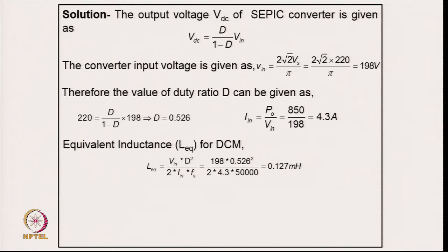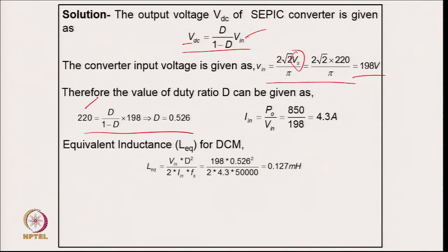Coming to the numerical part: the SEPIC converter is also a buck-boost converter. The average output voltage of the diode rectifier is V_in = 198 V for 220 V RMS. Putting in the value for output voltage of 220 V with this average input voltage gives a duty cycle of D = 0.526, above 0.5, confirming boost mode operation.